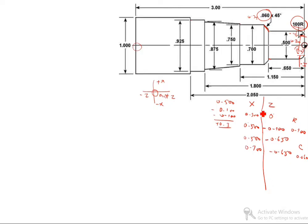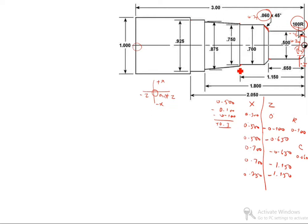After that, x value is 0.700, OR value is minus 1.150 — up to here finished. After that, 0.750 here is the x value, so you can write 0.750. OR value is minus 1.150 up to here. After that, this x value is 0.875, OR value is minus 1.800 — up to here we finished.